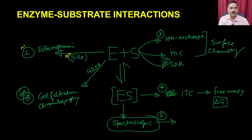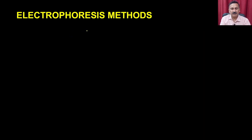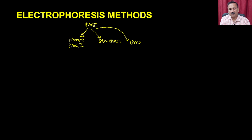Let us start discussing electrophoresis methods. In the previous lecture, we discussed ion exchange chromatography and gel filtration chromatography. In the electrophoretic system, you have two options: native PAGE and SDS-PAGE, and also a variation called urea PAGE. All three can be used to measure the mass of the enzyme, depending on what kind of substrate it is.